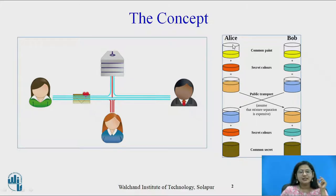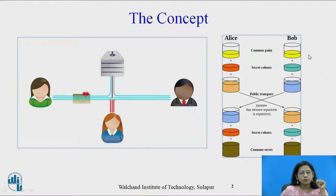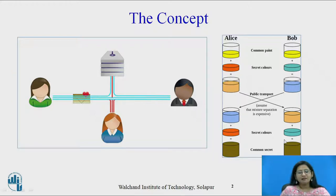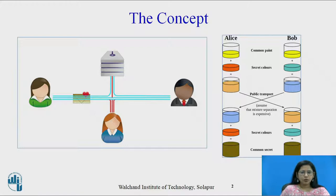Two parties, Alice and Bob, publicly agree on a single color — in this example it is yellow. Both parties also keep one secret color with them: Alice keeps orange and Bob keeps light blue. Then they mix both colors and exchange with each other, and after exchanging they obtain that particular original shared color.